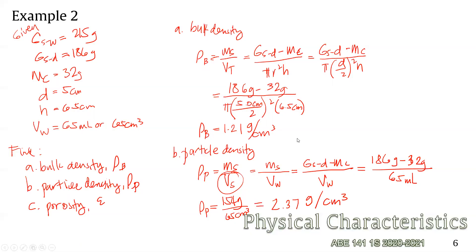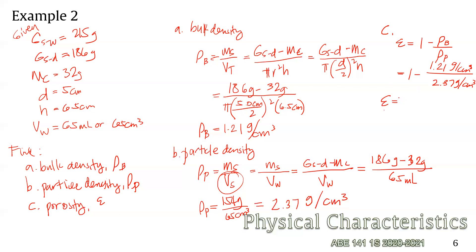We can now find the porosity using the same equation as before: porosity equals one minus bulk density over particle density. That is one minus 1.21 grams per cm³ over 2.37 grams per cm³. This gives a porosity of 0.49 or 49 percent.